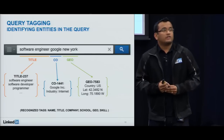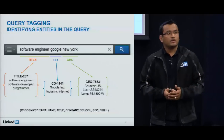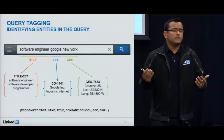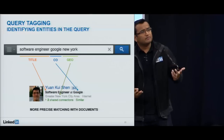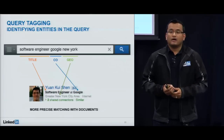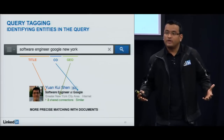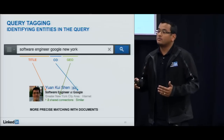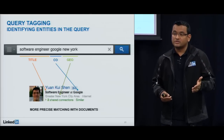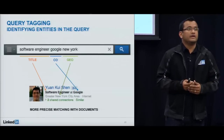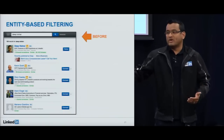For companies, we know Google is a company, its industry, its canonical name, and so on. For locations, we know the country and longitude/latitude so we can do range queries. We can also identify names, schools, and skills. The main idea is that we can do more precise matching with documents: 'software engineer' should match someone who lists it as their position, 'Google' should match someone at that company, and the person should actually be in New York — not just someone who mentioned New York somewhere in their profile.